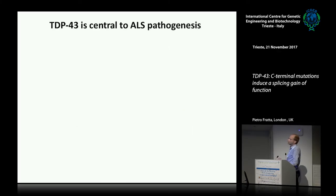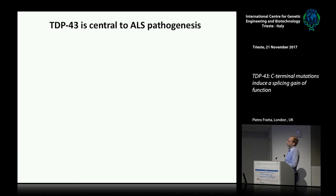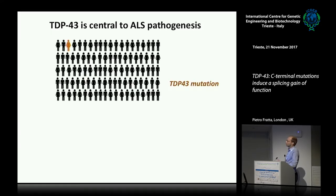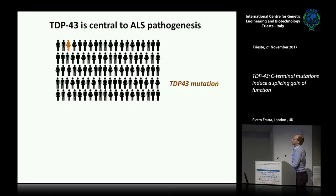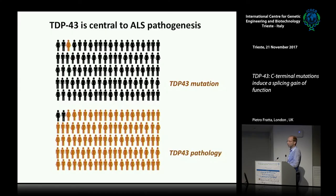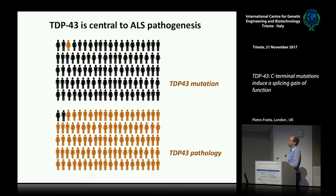TDP-43 is really central to the pathogenesis of ALS. There have been two major observations that back it up. The first, which is actually the second historically, is the genetics: although vanishingly rare, mutations in TDP-43 or in the gene encoding TDP-43 do cause disease. And before that is the pathology finding from Manuel Neumann, who just spoke. In 2006, it was shown that TDP-43 is in the inclusions, and definitely over 90–95% of ALS patients have TDP-43 pathology.